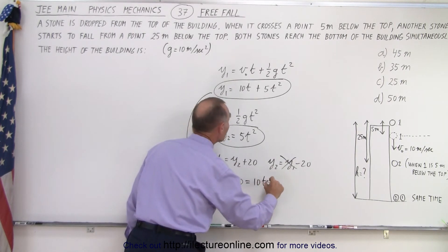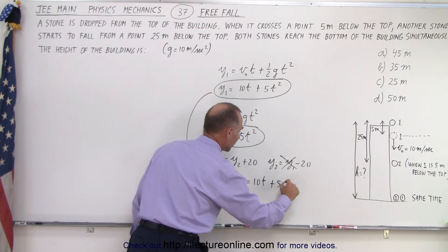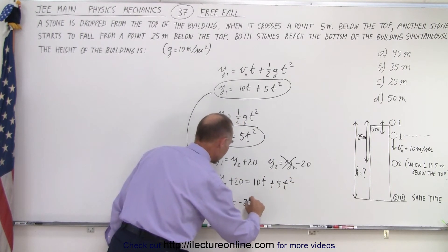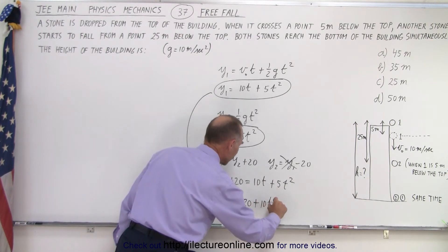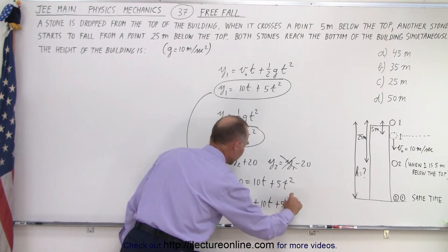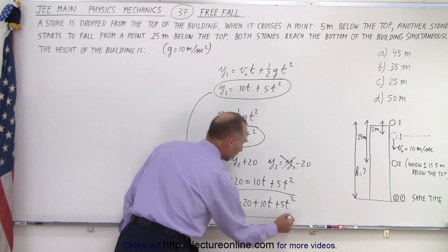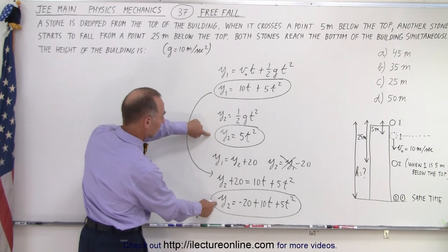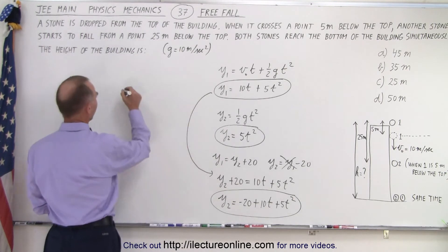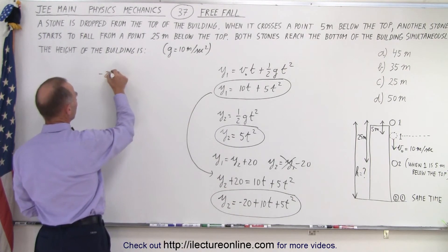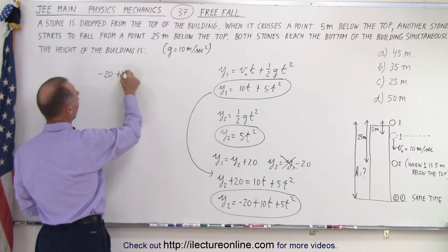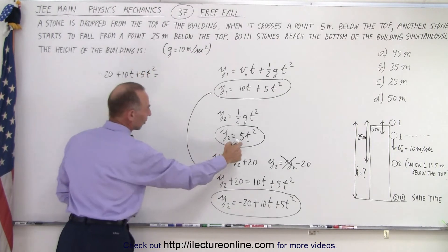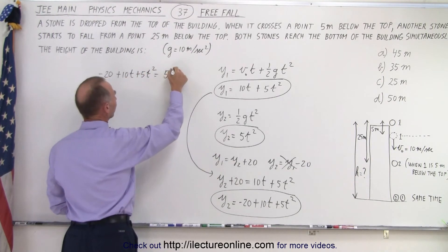y1 equals 10t plus 5t squared. Moving the 20 across, we get y2 is equal to minus 20 plus 10t plus 5t squared. So, now we have two equations for y2, and we could solve those simultaneously by setting them equal to each other. So, now we can say, on the left side, we have minus 20 plus 10t plus 5t squared equals this equation, which is 5t squared.